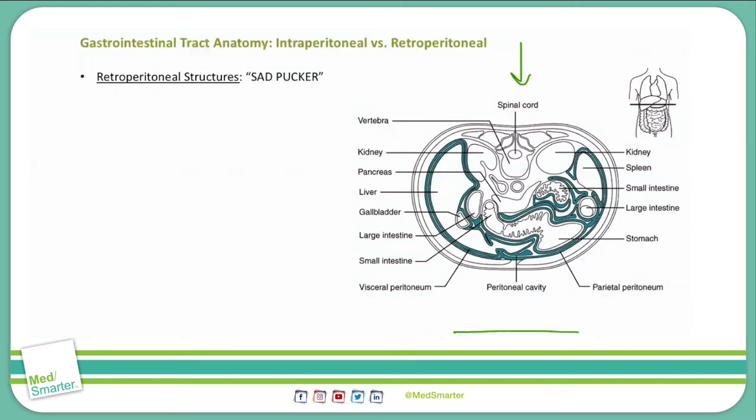There is a very well-known mnemonic that will aid in memorizing the retroperitoneal structures. You'll see it in all sorts of review resources, and that mnemonic is SAD PUCKER.